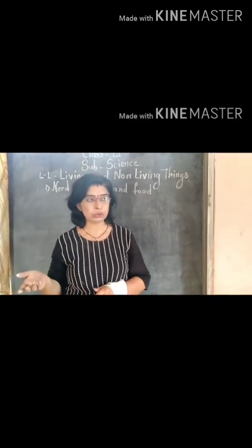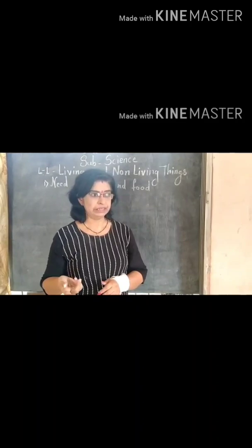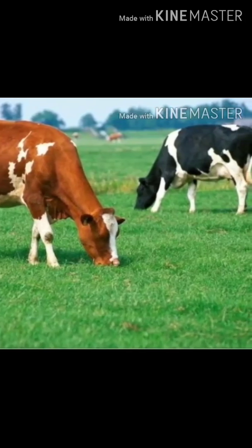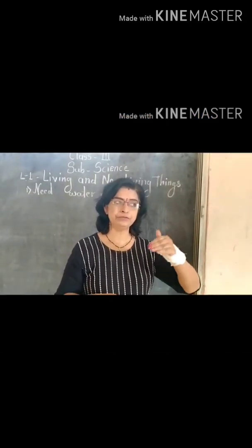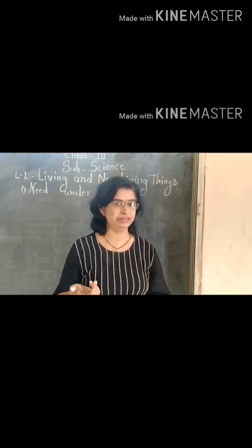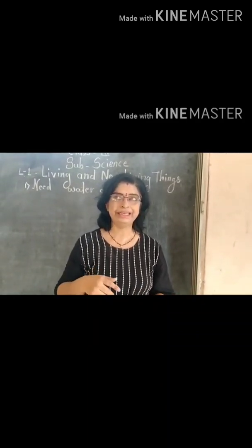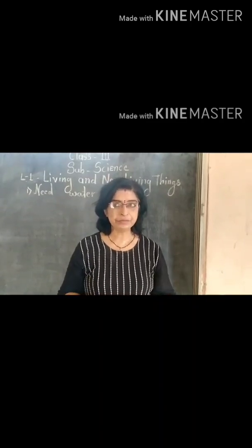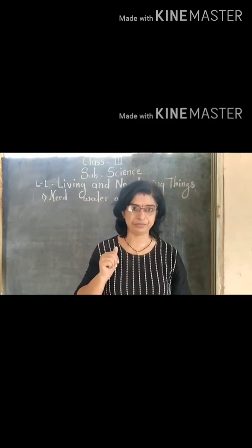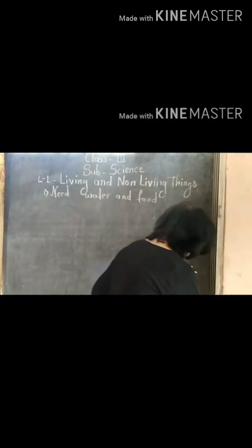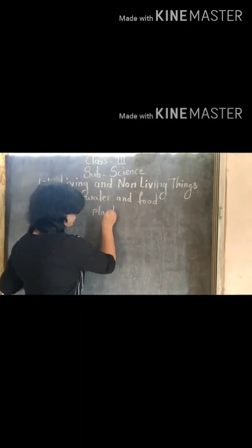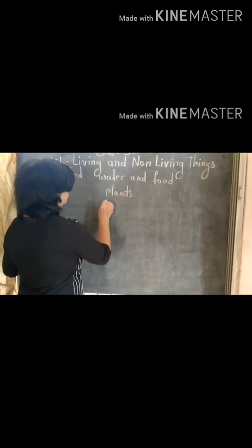Some animals like cow, goat, buffalo, deer, rabbit, and some birds take their food from plants — they eat plants. Then some animals like lion, tiger, cheetah, and some birds like vulture and eagle kill other animals and eat their flesh. So some animals get food from plants, and some animals get food from the flesh of other animals.